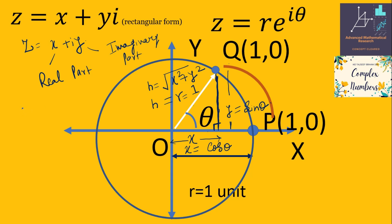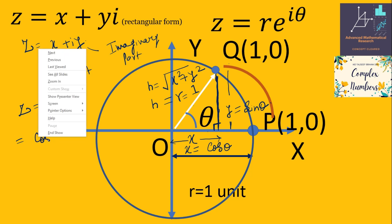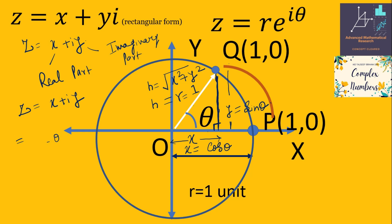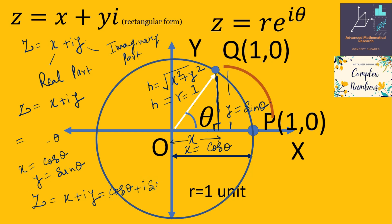So the complex number z = x + i·y can be represented as: x = cosine theta and y = sine theta. Therefore z = cosine theta + i·sine theta, which is also written as e^(iθ). This is Euler's formula connecting the rectangular and polar forms of a complex number.